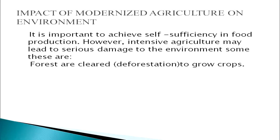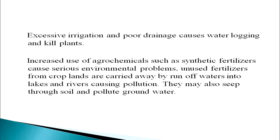Impact of modernized agriculture on the environment: it is important to achieve self-sufficiency in food production; however, intensive agriculture may lead to serious damage to the environment. Forests are cleared to grow crops. Excessive irrigation and poor drainage cause waterlogging and kill plants. Increased use of agrochemicals such as synthetic fertilizers causes serious environmental problems. Unused fertilizers from crop plants are carried away by runoff water into lakes and rivers, causing pollution.